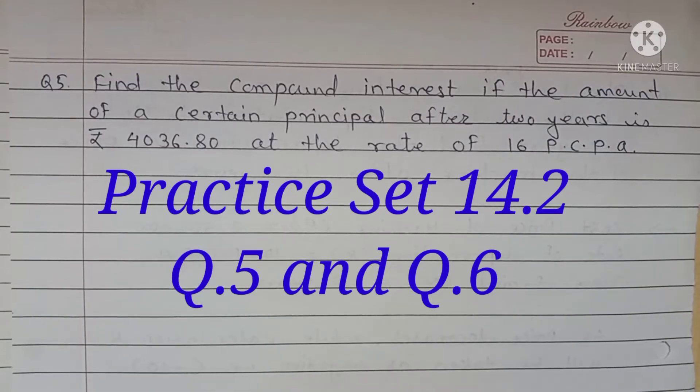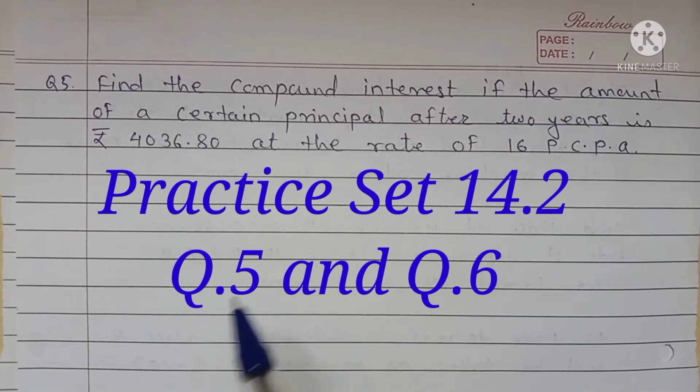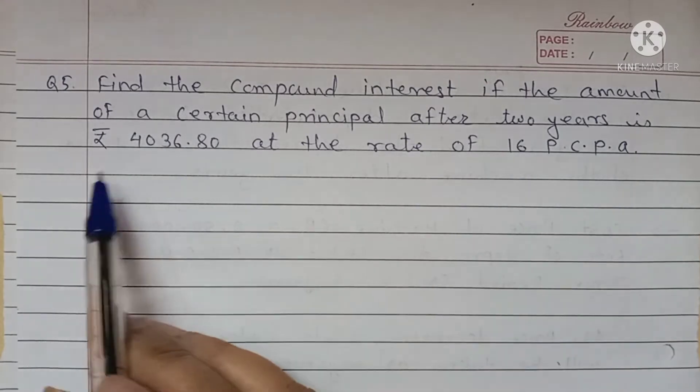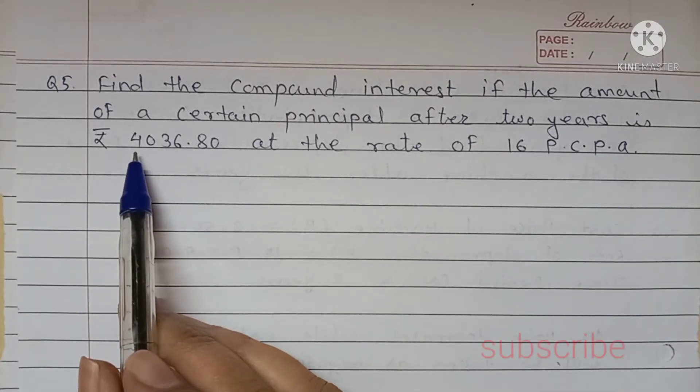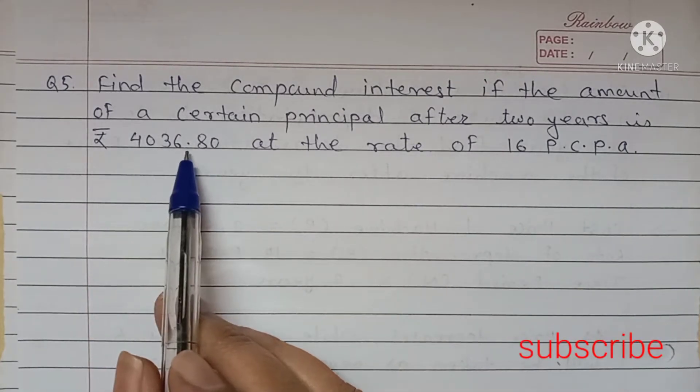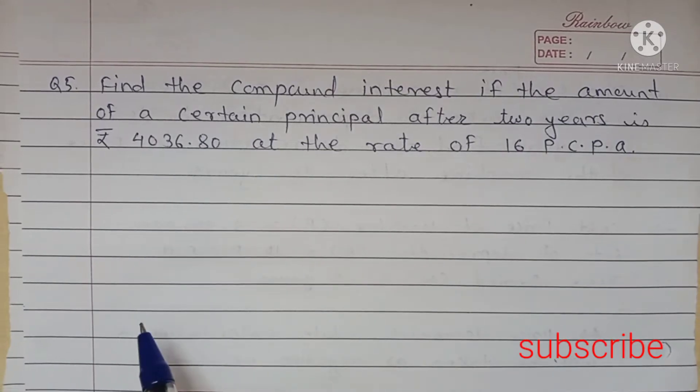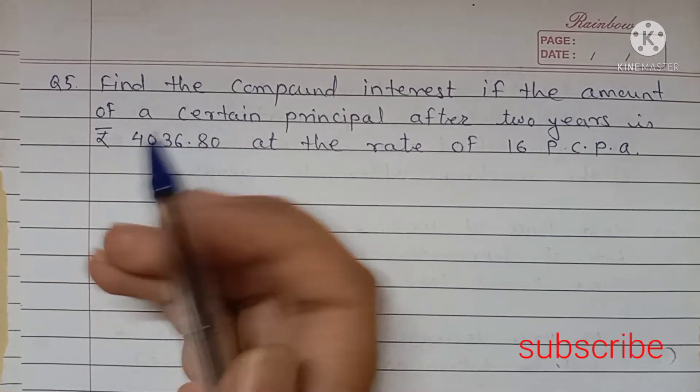Number 5. Find the compound interest if the amount of a certain principal after 2 years is Rs. 4036.80 at the rate of 16 PCPA.